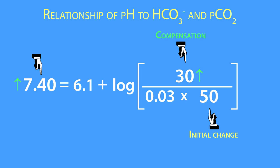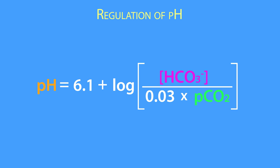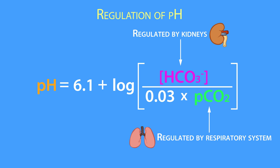Second, the equation provides a simplified view of how pH is regulated. For example, plasma bicarbonate concentration is primarily regulated by the kidneys, while the partial pressure of CO2 is mainly regulated by the respiratory system.